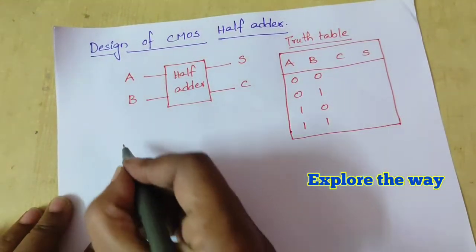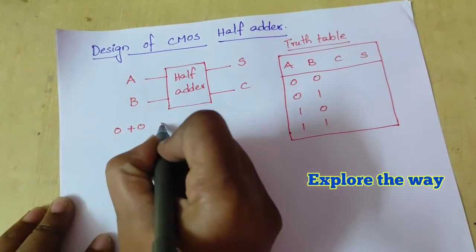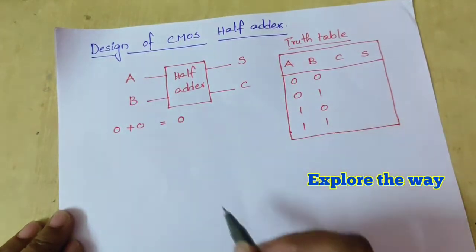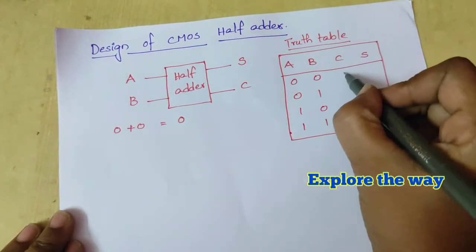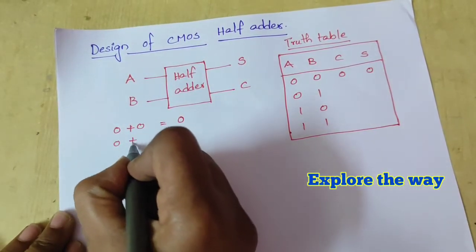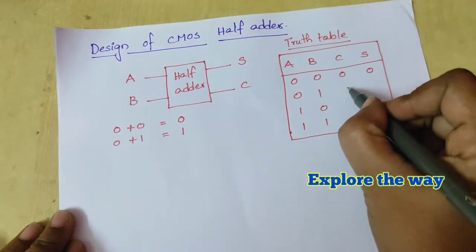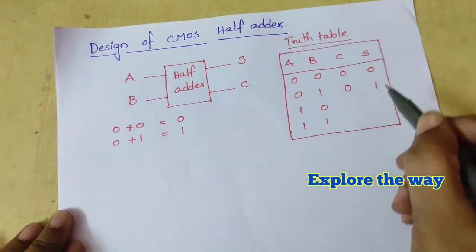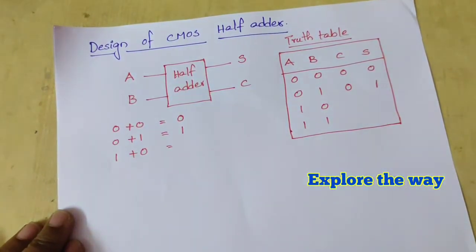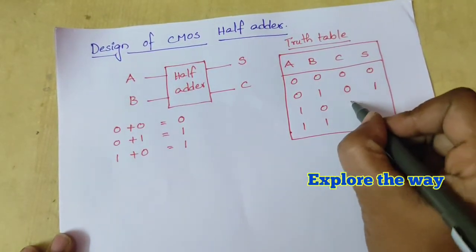When you add 0 plus 0, it produces sum 0 and carry 0. For 0 plus 1, it doesn't generate any carry, so carry is 0 and sum is 1. For 1 plus 0, again sum equals 1 and carry is 0.